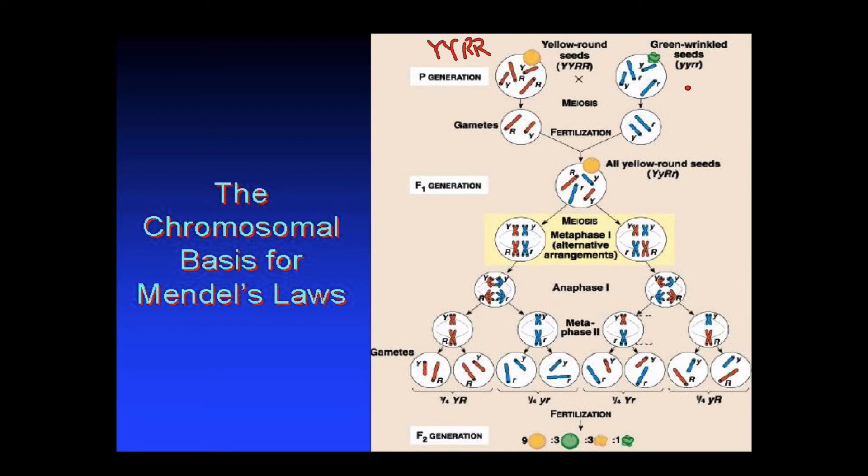And over here we have the opposite. We have little y, little y, little r, little r. So we got the genotypes and the phenotypes. Now as you can see during meiosis, the homologous pairs separate during meiosis one, so the gametes that this individual can make over here, all are going to be big Y, big R, and over here are going to be little y, little r.